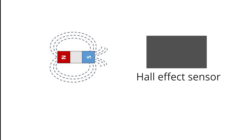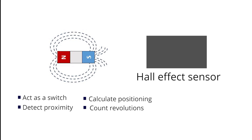A Hall-effect sensor can be combined with threshold detection to act as a switch. Hall-effect sensors are mainly used to detect proximity, calculate positioning, count the number of revolutions of a wheel, detect a door closing, and much more.